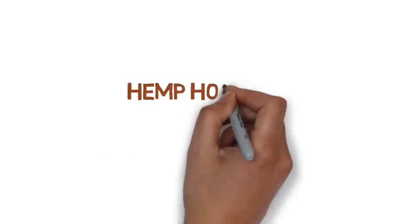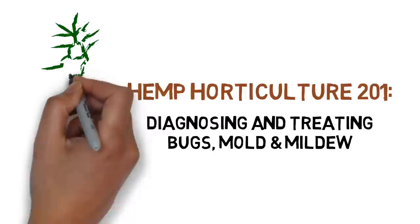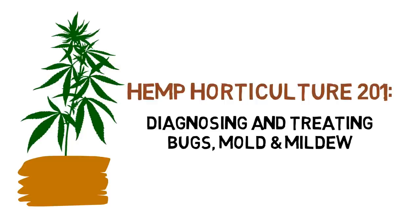Hey everyone and welcome to the hemp horticulture series. Today we'll be going over the abiotic and biotic problems of water, temperature, bugs, mold, and mildew, as well as how to solve them.